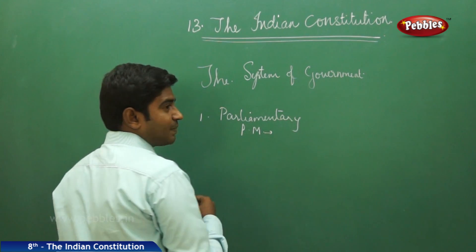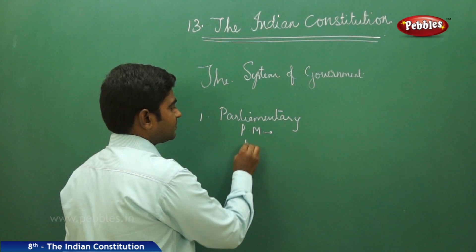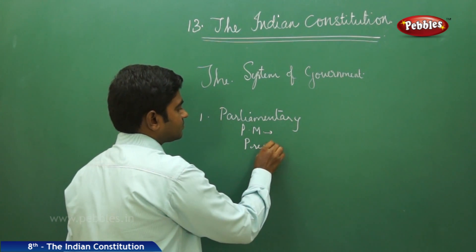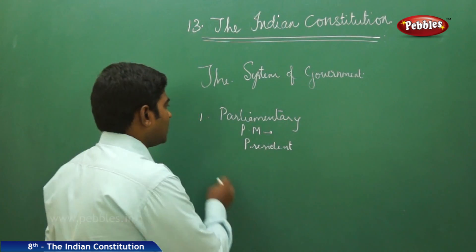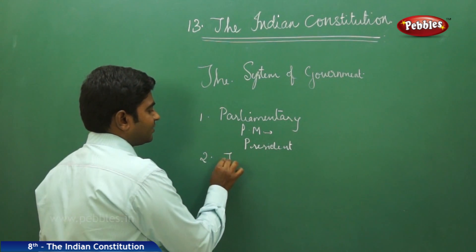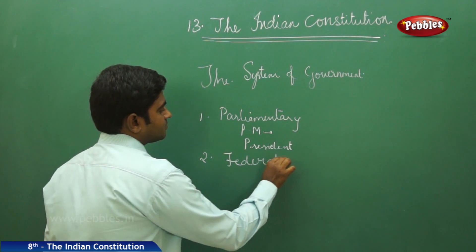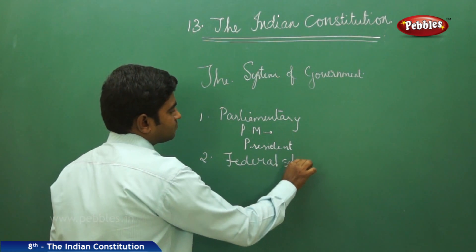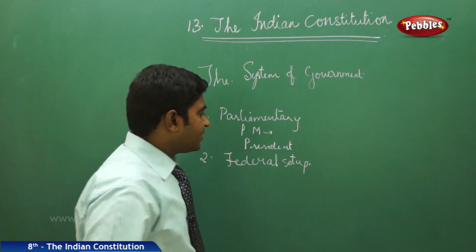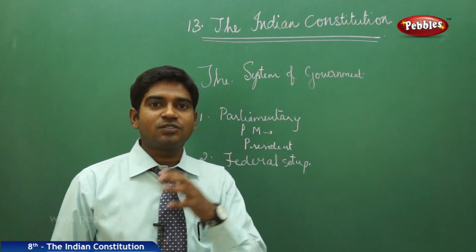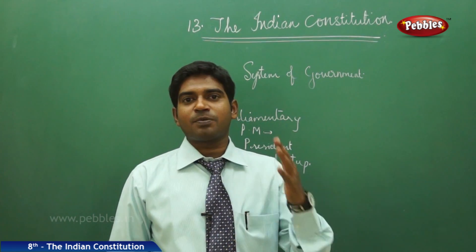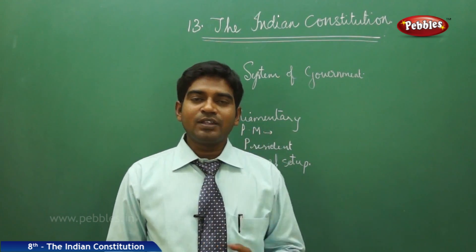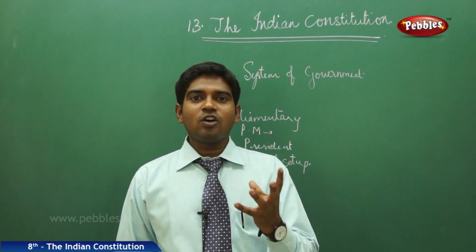In parliament, all members will be elected by the people directly. The Prime Minister heads the government of the ruling party and the President heads the nation — all are answerable and accountable to parliament. Before a bill gets drafted it must be passed in parliament, providing the parliament with that supremacy.